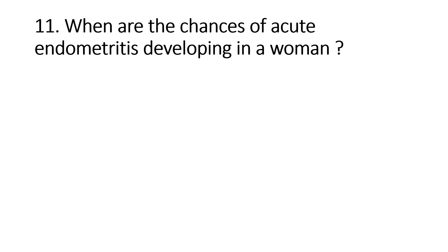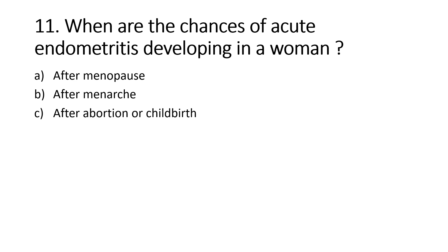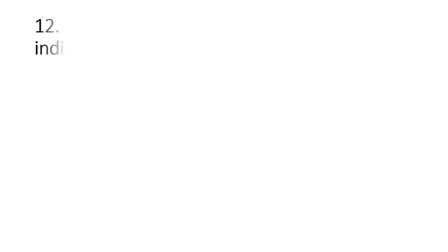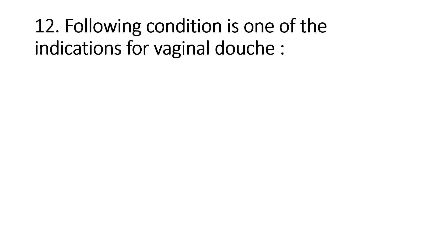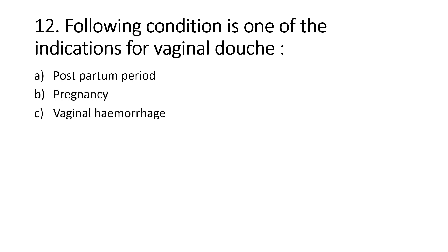When are the chances of acute endometritis developing in a woman? Option A, After menopause; Option B, After menarche; Option C, After abortion or childbirth; Option D, In childhood. Right answer is Option C, After abortion or childbirth. Endometritis is inflammation of the endometrial uterine lining, most commonly occurring in the immediate postpartum period.